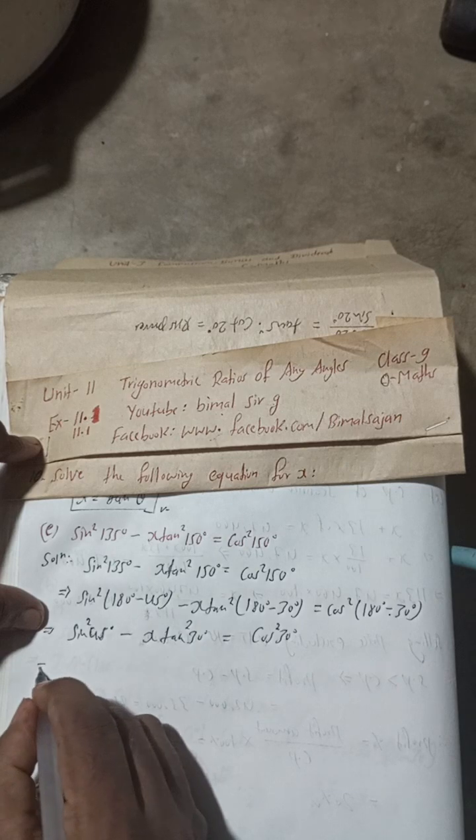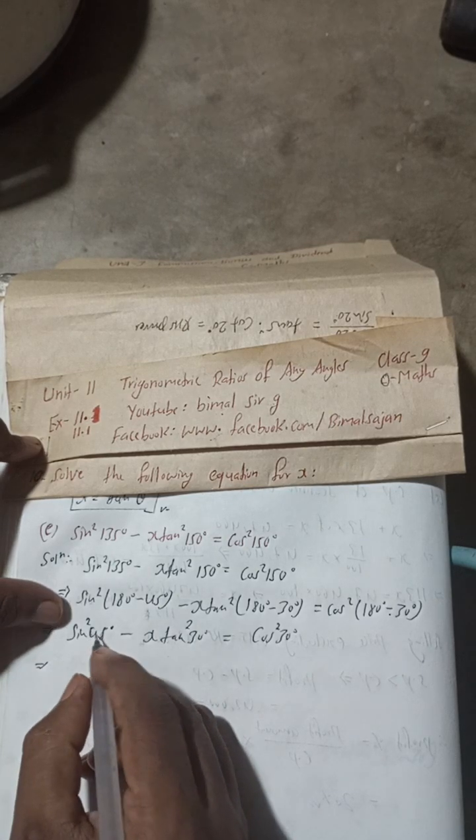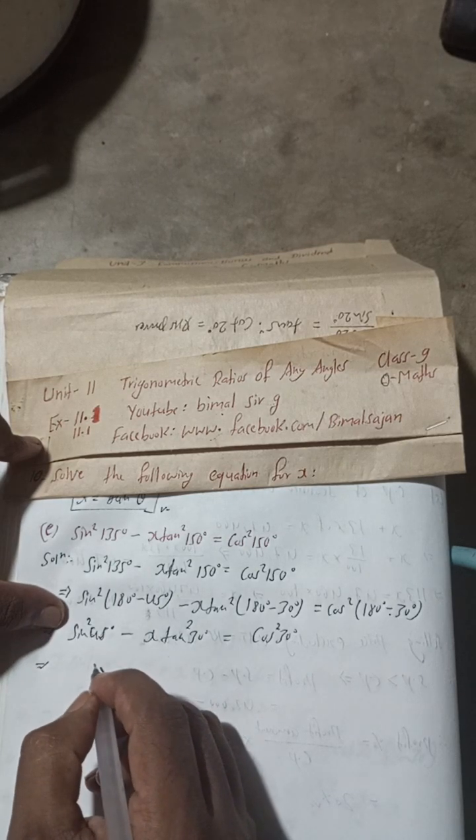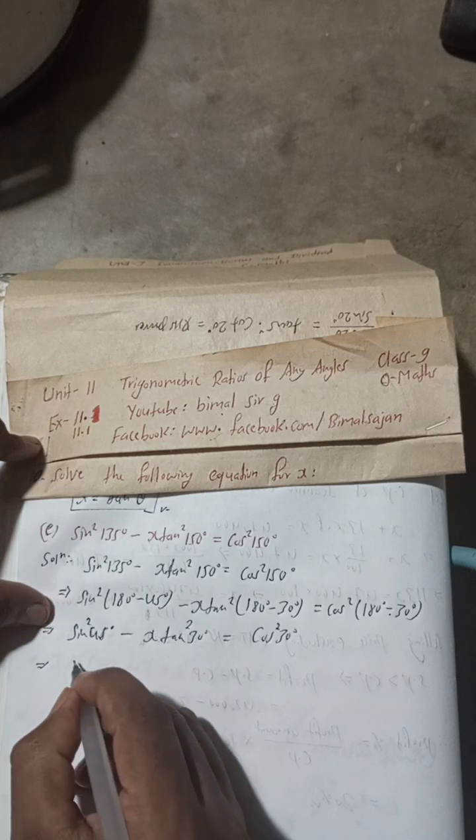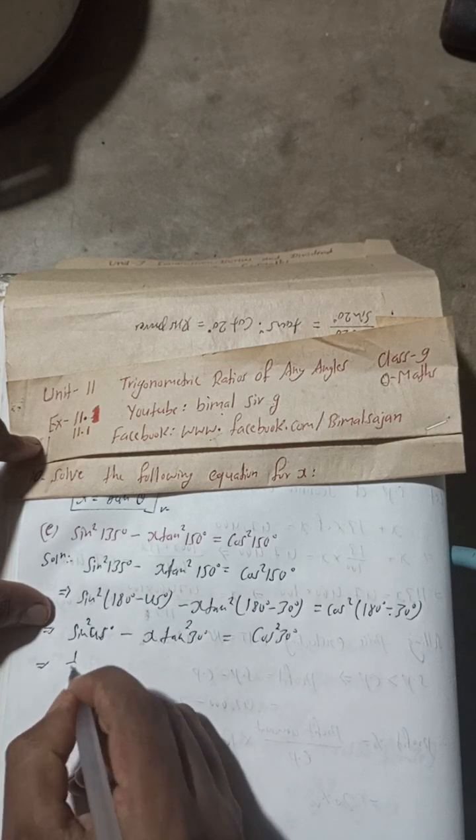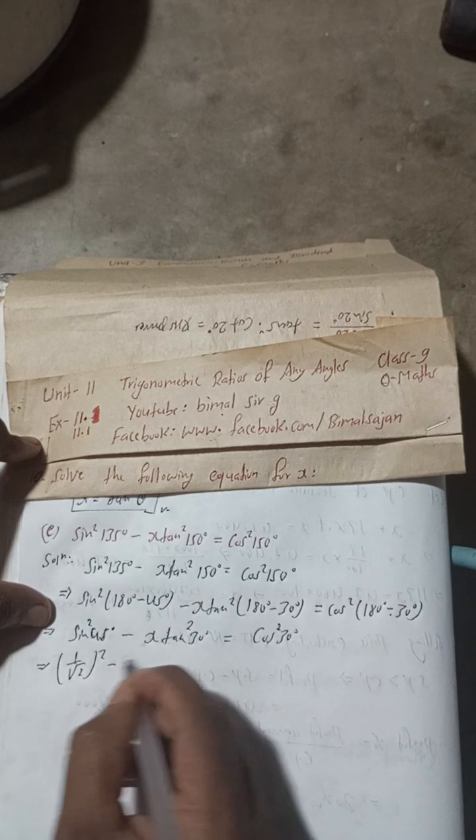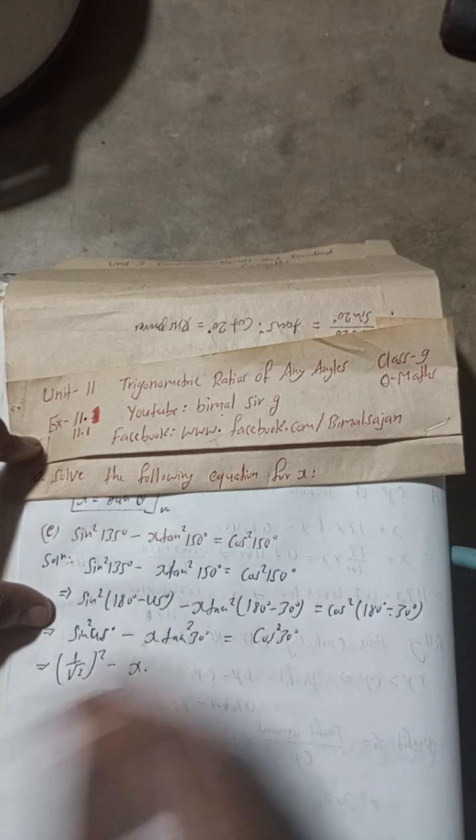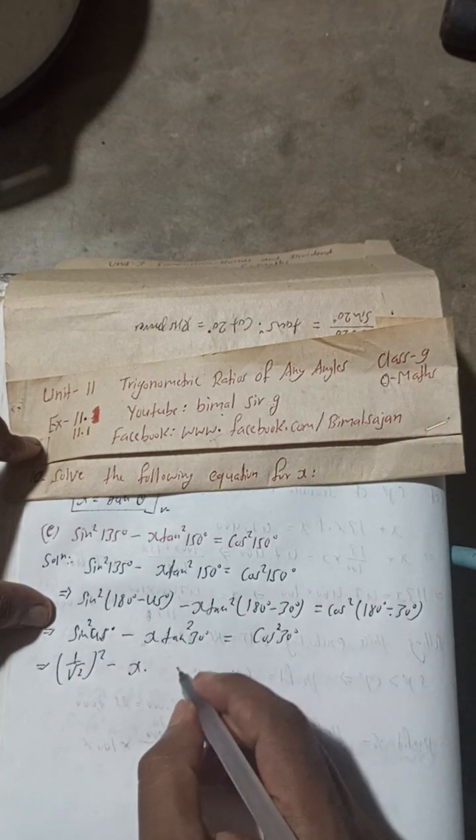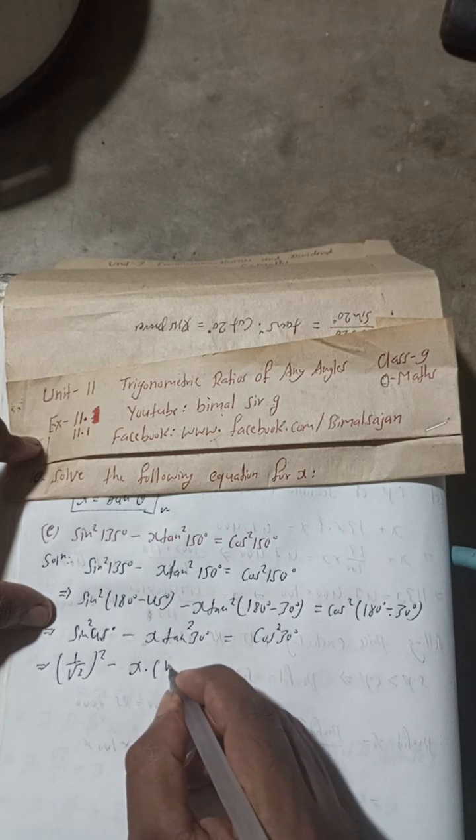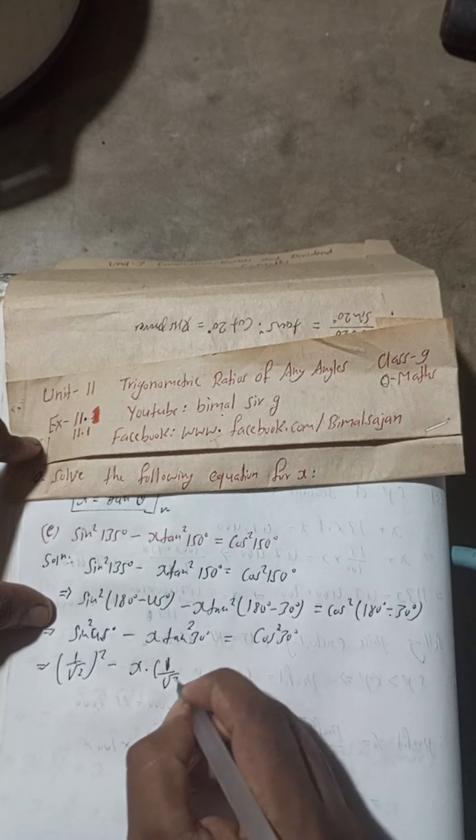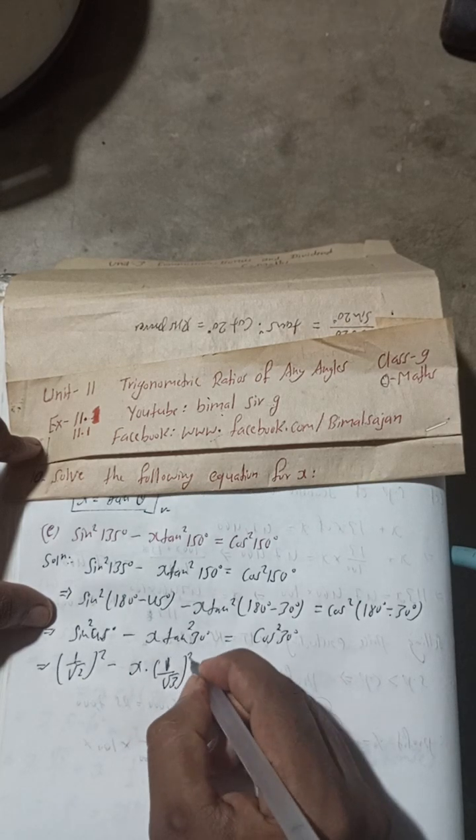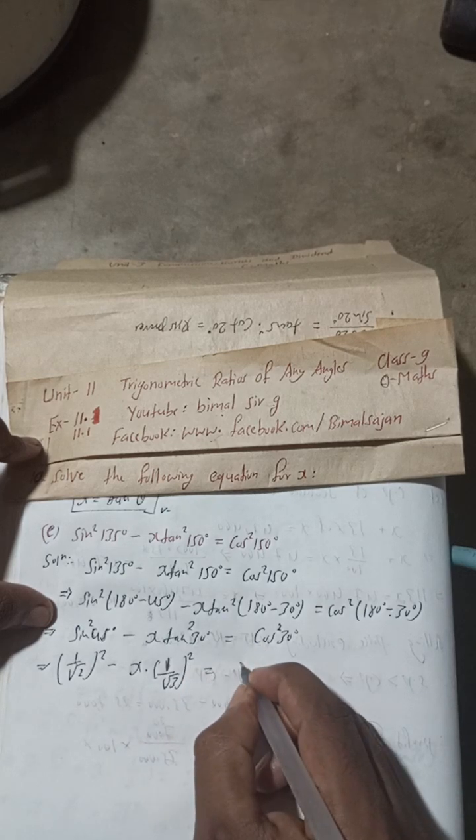So now, after the next step, put this value here. sin 45° value is 1/√2, but there is a square, so (1/√2)² - x. tan²30° means (1/√3)² is equal to cos 30°, which is (√3/2)².